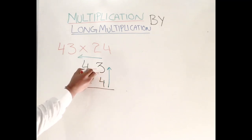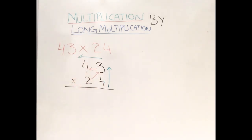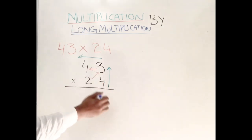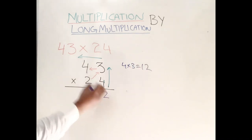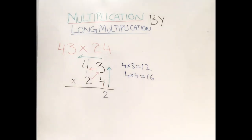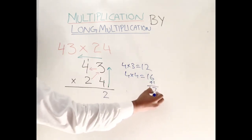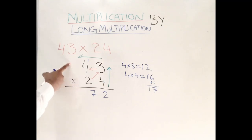First, ignore the tens digit of 24 and multiply using just the unit digit 4. So four times three is twelve — write two, carry one. Then four times four is sixteen, add the carried one which is seventeen. Write seven and carry one. No further digits, so write down one — giving us 172 for the first row.